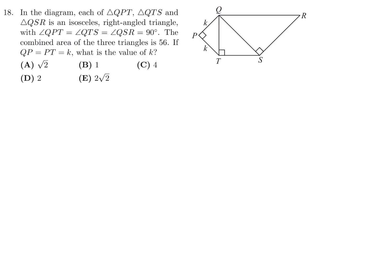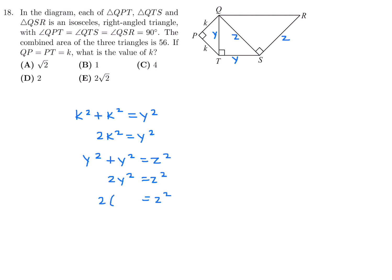In the diagram, each of triangles QPT, QTS, and QSR is an isosceles right-angle triangle with the right angle at Q, and the combined area of the three triangles is 56. QP equals PT equals K; what is the value of K? Label the hypotenuse of triangle QPT as Y — by Pythagoras, K² plus K² equals Y², so 2K² equals Y². Then label the next hypotenuse as Z: Y² plus Y² equals Z², so 2Y² equals Z² equals 4K².